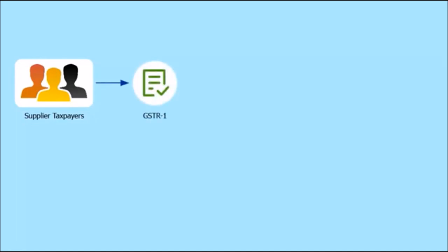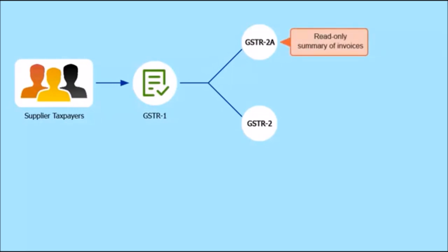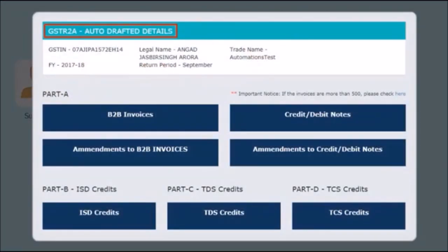Once the supplier taxpayer uploads invoice data in GSTR 1, the GSTR portal auto-populates the details in GSTR 2A and GSTR 2 of the respective recipients based on their GSTIN. GSTR 2A is a read-only summary of invoices based on the data received from the suppliers. The invoices saved as well as submitted by the suppliers will be visible in GSTR 2A and will be indicated by their status.